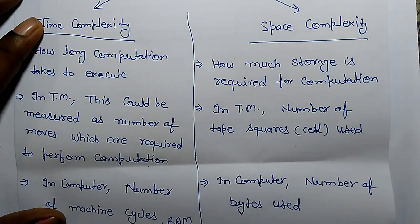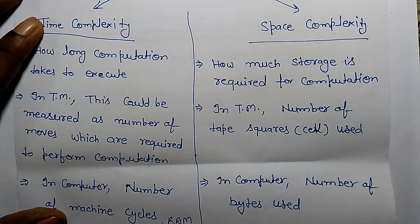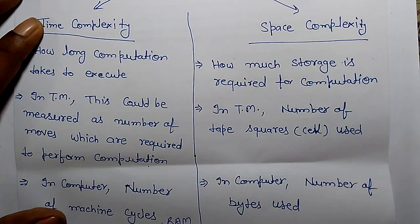Another complexity is space complexity. The moment a program runs, it requires a certain amount of memory space. Space complexity is how much storage is required for computation.